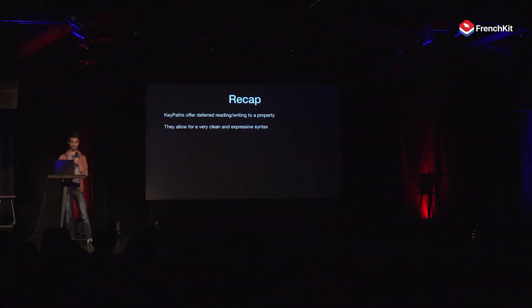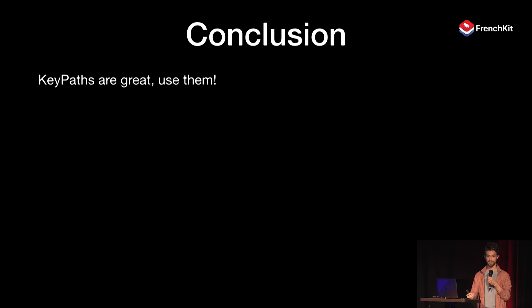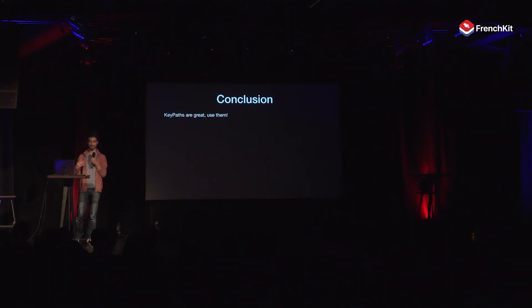Let's recap everything we've seen. KeyPaths offer a way to defer reading and writing to a property, similar to a closure. They allow for very clean and expressive syntax — you just add a backslash, which is minimal overhead. They work very well with generic algorithms that involve data structures. For this reason, they are a great tool to build any kind of DSLs. In conclusion, key paths are really awesome and you should use them in your code. If you think about your code base, you'll find many instances where closures could be reduced or complex logic could be simplified with a predicate.